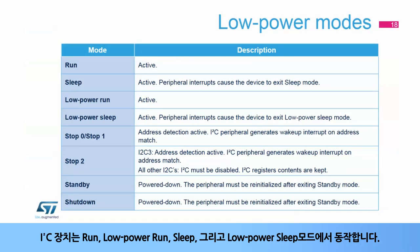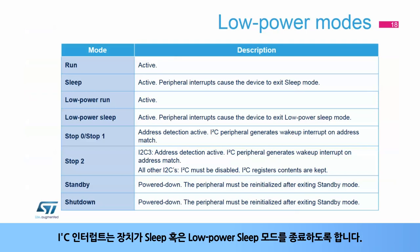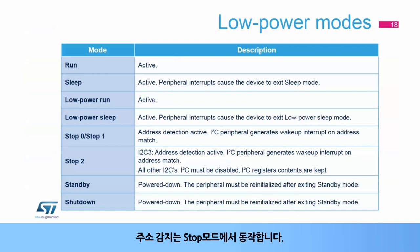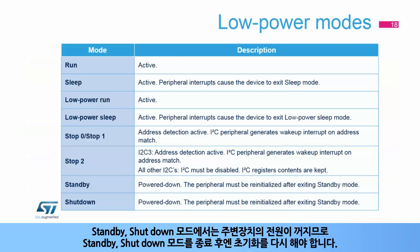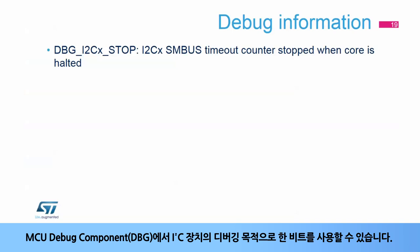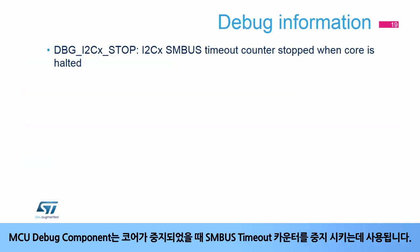The I2C peripheral is active in run, low-power run, sleep, and low-power sleep modes. I2C interrupts cause the device to exit sleep or low-power sleep modes. Address detection is active in stop modes. The I2C peripheral generates a wake-up interrupt in the event of an address match. In standby and shutdown modes the peripheral is powered down and must be reinitialized after exiting standby or shutdown mode. For each I2C peripheral, a debug bit is available in the MCU debug component that can be used to stop the SMBus timeout counter when the core is halted.